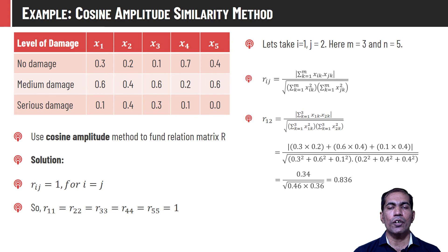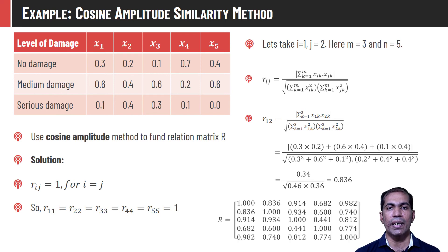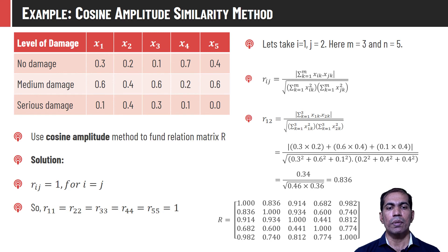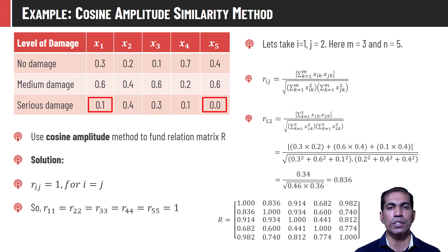Similarly we can compute the similarity between x1 & x3, x1 & x4, and so on. When we compute the similarity scores for all vector pairs we can represent it in a matrix. This matrix tells us which vectors are more similar and which are dissimilar. Looking at this matrix, vector 5 and vector 1 are almost similar because they have the highest similarity score of 0.982. In the table, the no-damage values are 0.3 for x1 and 0.4 for x5 — a difference of just 0.1 — and medium damage is 0.6 in both cases.